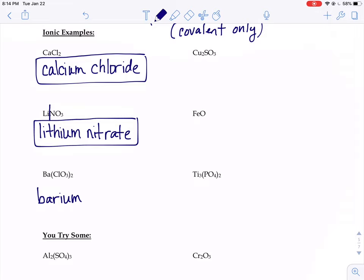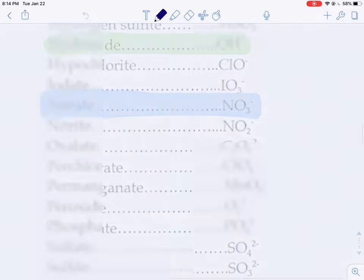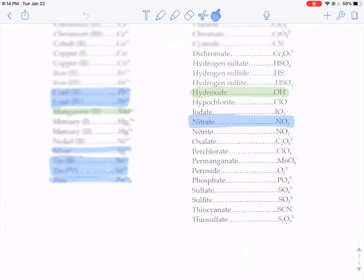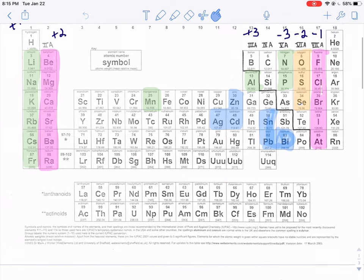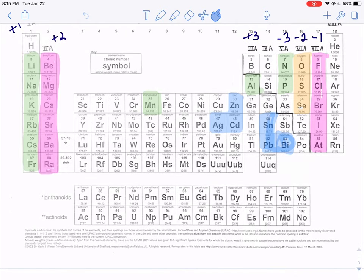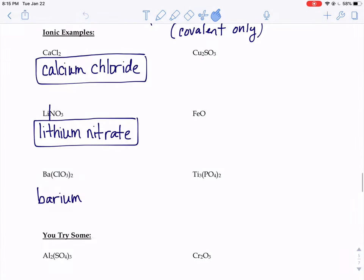Do I need a Roman numeral to go along with that barium? Let's look. Barium is in the second column, so barium is always plus two. No Roman numeral needed because we know what the charge is. So metal part is done.